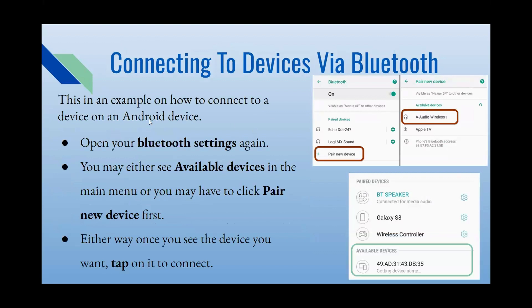On an Android device, open the Bluetooth settings. You may see available devices in the main menu, or you may need to click 'Pair new device' first — not every device will appear right away. If your speaker or headset doesn't show up, go to 'Pair new device' and Bluetooth will search and connect to your device.